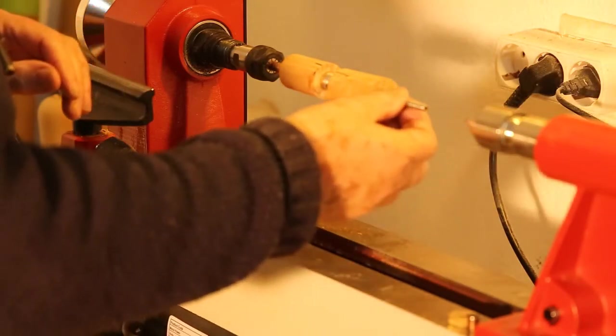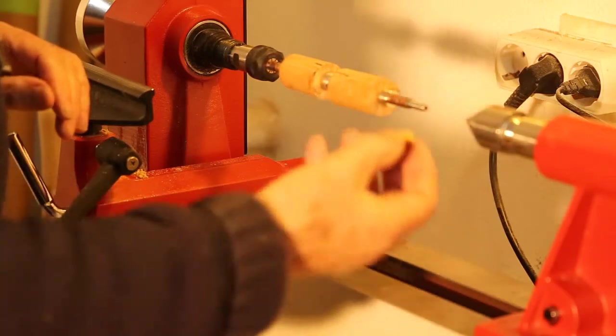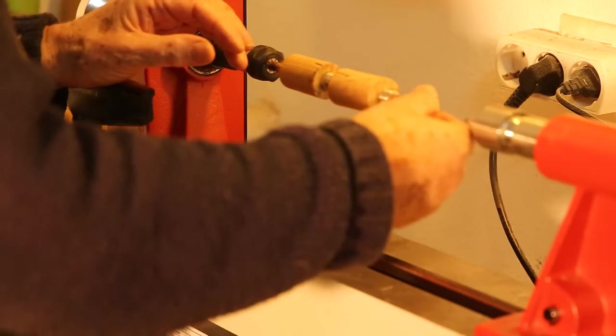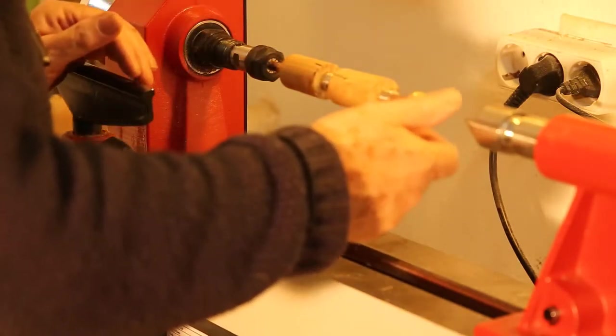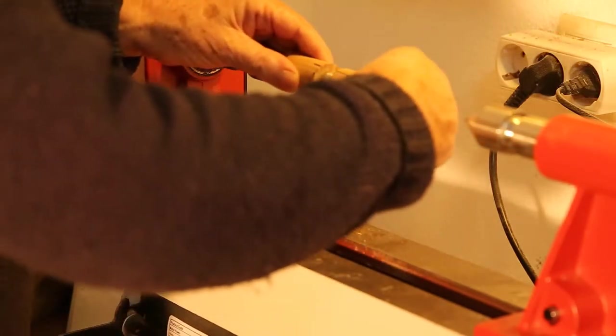Again, two little spacers and a brass nut to clamp the whole thing together. This has to be fairly tight. Otherwise, the wood will spin on the mandrel.